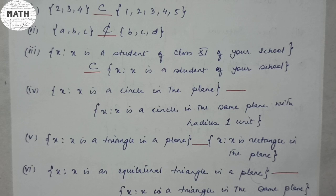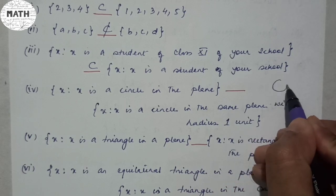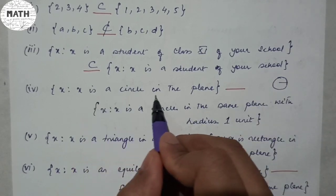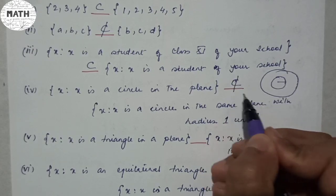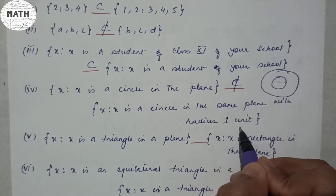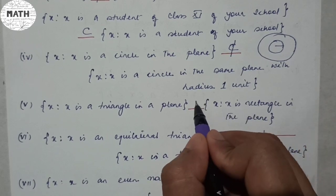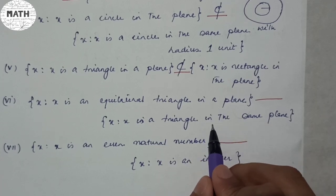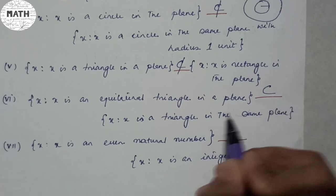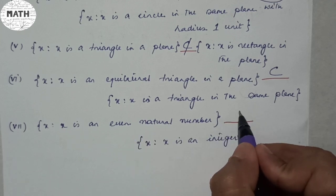Number four: X is a circle in the plane — X is a circle in the same plane with radius 1 unit. A general circle in the plane is not necessarily inside the circle of radius 1 unit, so this is not a subset. Number five: X is a triangle in a plane — X is a rectangle in a plane. Not a subset. Number six: X is an equilateral triangle — X is a triangle in the same plane. An equilateral triangle is a triangle, so this is a subset. Number seven: X is an even natural number — X is an integer. Even natural numbers are integers, so that is a subset.